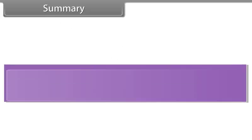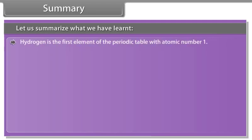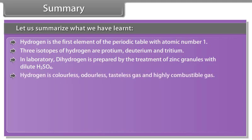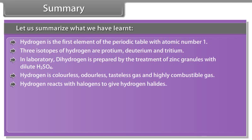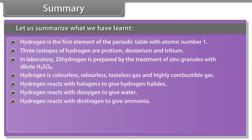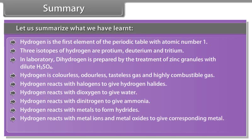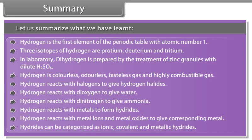Summary. Let us summarize what we have learned. Hydrogen is the first element of the periodic table with atomic number 1. Three isotopes of hydrogen are Protium, Deuterium and Tritium. In laboratory, dihydrogen is prepared by the treatment of zinc granules with dilute sulfuric acid. Hydrogen is colorless, odorless, tasteless gas and highly combustible gas. Hydrogen reacts with halogens to give hydrogen halides. Hydrogen reacts with dioxygen to give water. Hydrogen reacts with dinitrogen to give ammonia. Hydrogen reacts with metals to form hydrides. Hydrogen reacts with metal ions and metal oxides to give corresponding metal. Hydrides can be categorized as ionic, covalent and metallic hydrides.